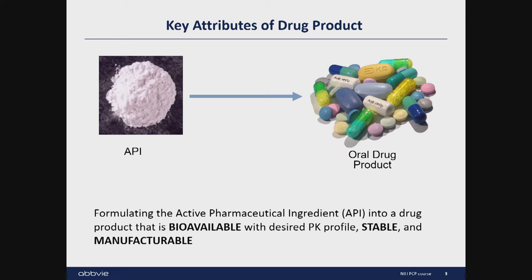When we work on the drug, we call it API — Active Pharmaceutical Ingredient. That's basically the common name of the drug; you start with the drug as a powder. What you give the patient is the oral drug product, presented as pills, capsules, tablets, or sachets, but they need to be formulated. Formulation means converting the drug powder by adding excipients to make the drug product bioavailable, stable — chemically and physically — and also manufacturable.